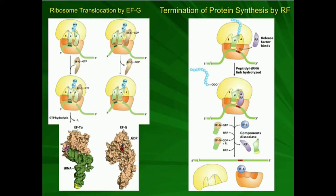You'll notice here we have a stop codon. There are three stop codons in fact, and this one is UAG. It turns out that instead of having a tRNA come in to the A site like we talked about in the previous video, if we have a stop codon, then we're going to have what's called a release factor. The release factor is going to come into the A site, and once it gets in, it's going to bind strongly to the stop codon.